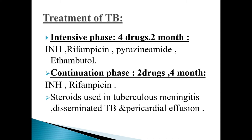The next phase is the continuation phase, in which we use two drugs — INH and rifampicin — for four months. The role of steroids is indicated in certain cases of tuberculosis, such as disseminated tuberculosis and pericardial effusion.